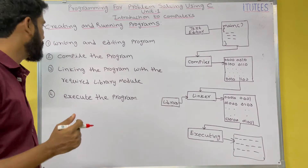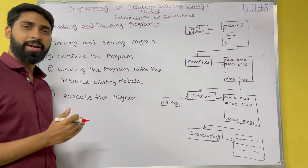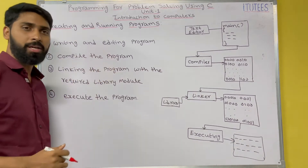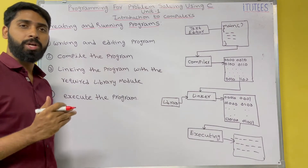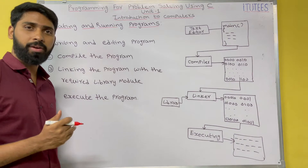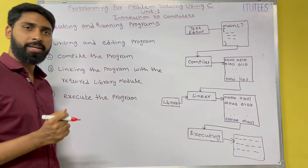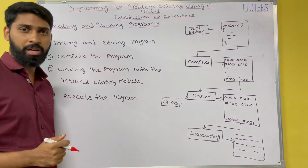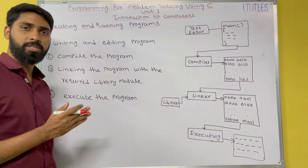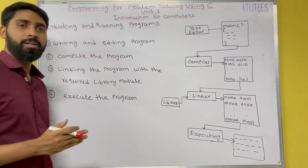When you are going to write a program, you are going to follow some steps. The first step is writing and editing the program. The second step is compiling the program. Compiling is needed because you write the program using C or any other high-level language, but the computer can understand only machine language, so we need a translator.